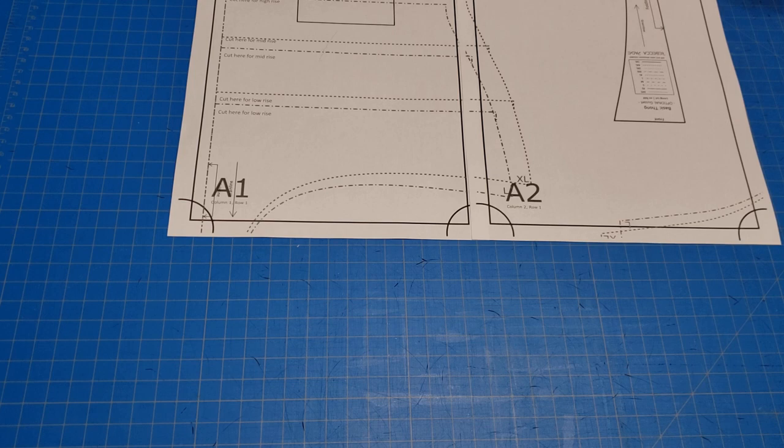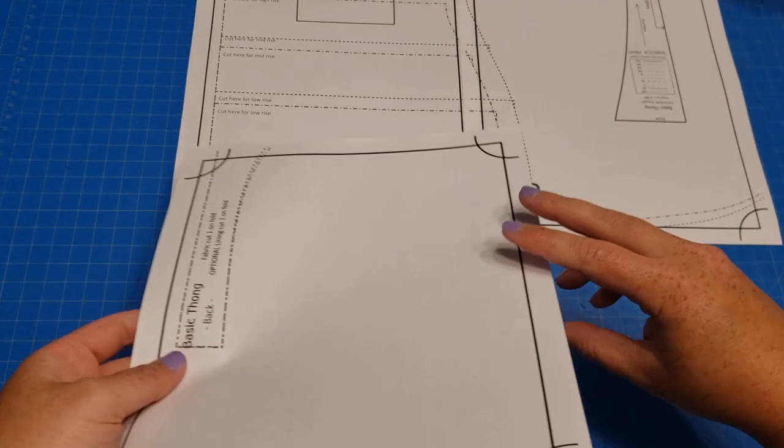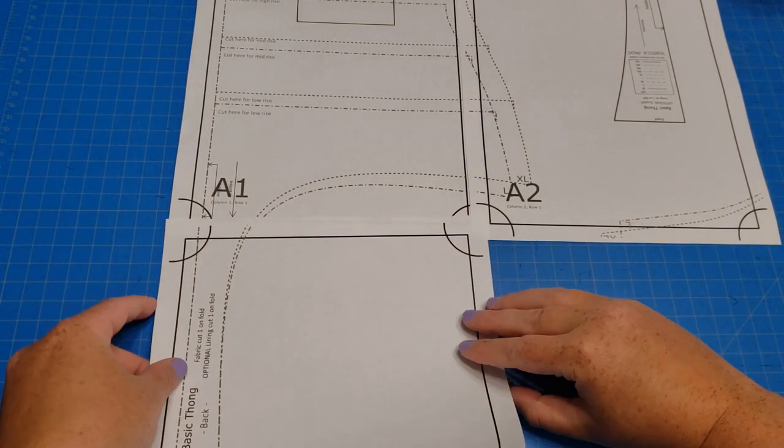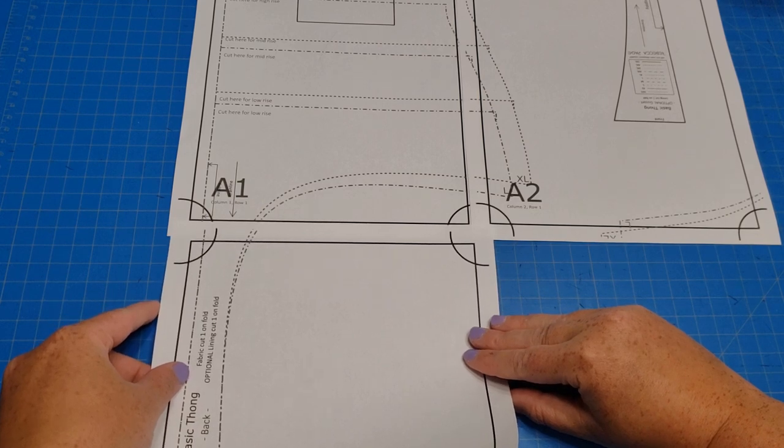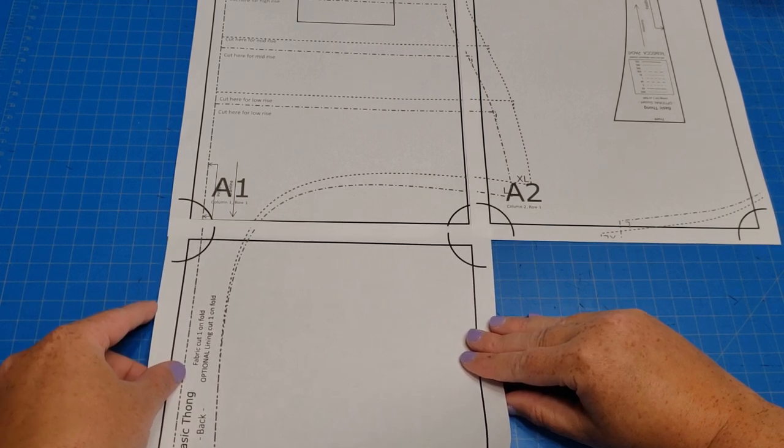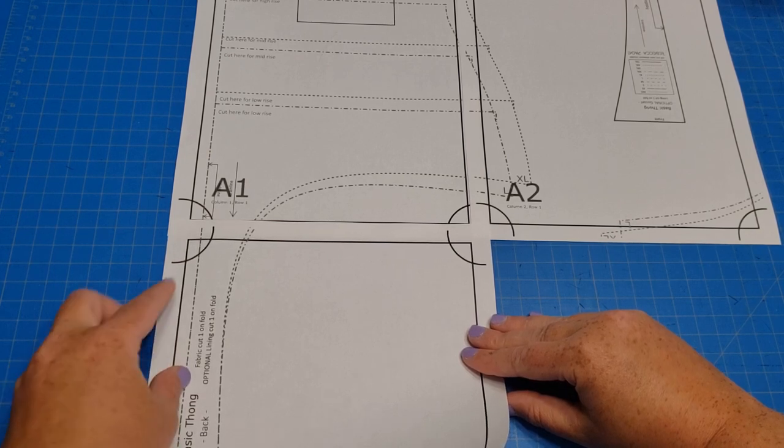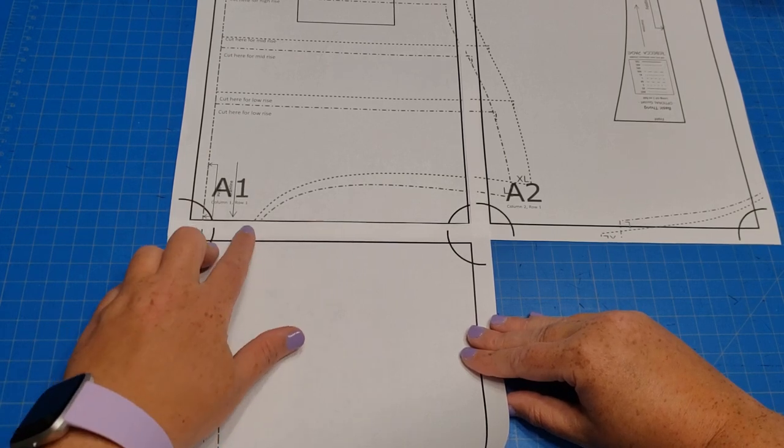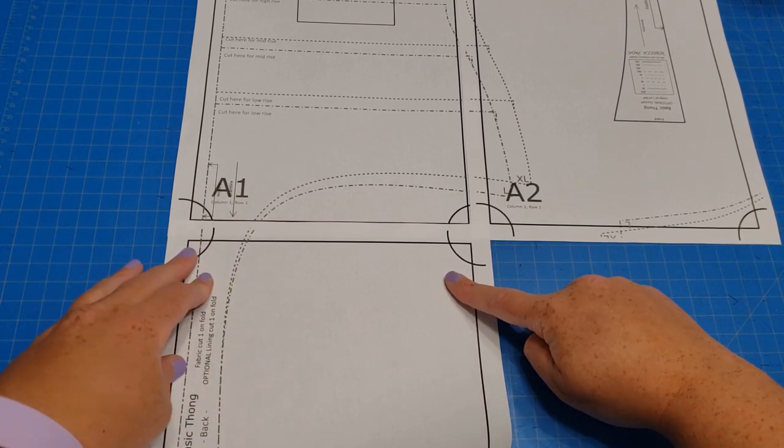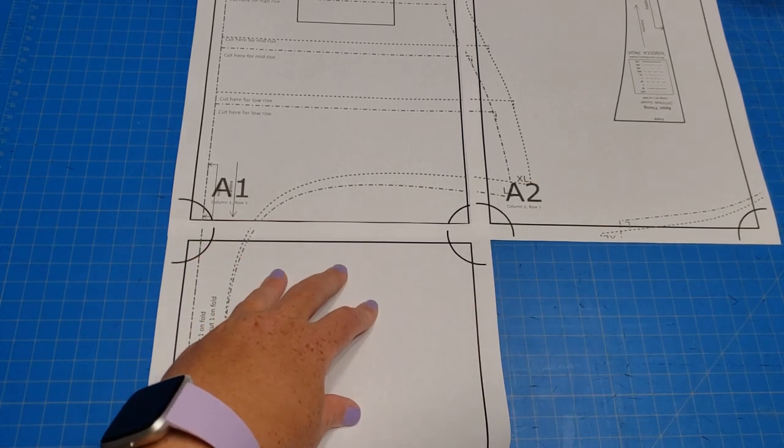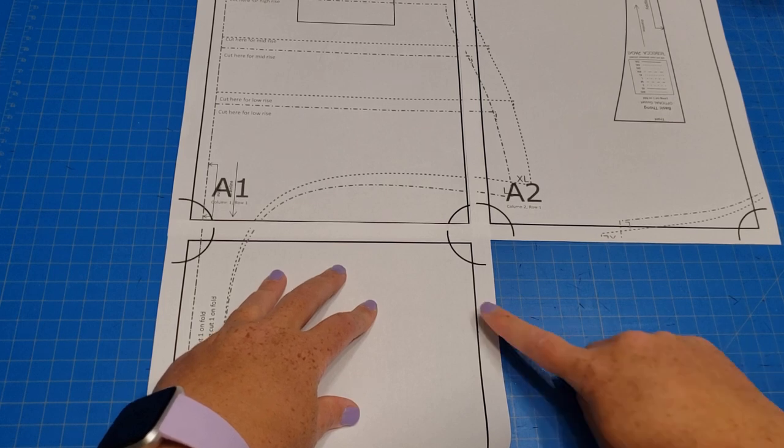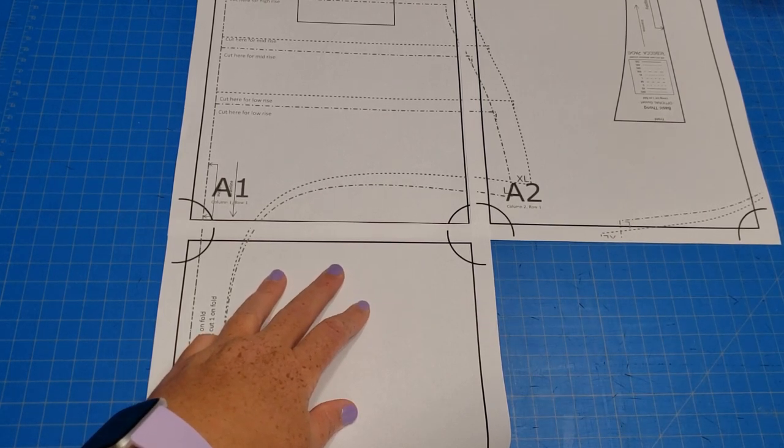And then for your second row, you just come down here like this and line that up exactly the same way. So the edge of the page against that dark line, just making circles beautiful and round, and line up your pattern pieces and glue or tape that in place—whatever your preference is. Then you can just keep going until your pattern is fully put together.